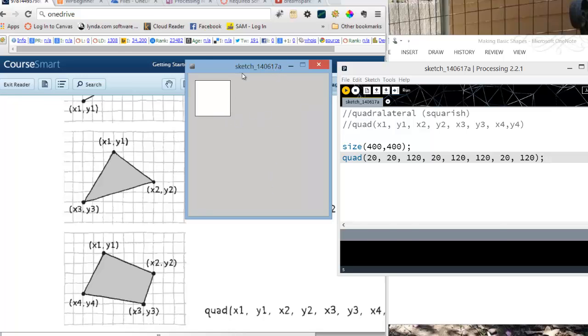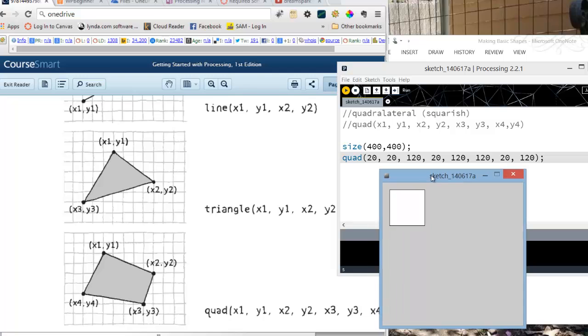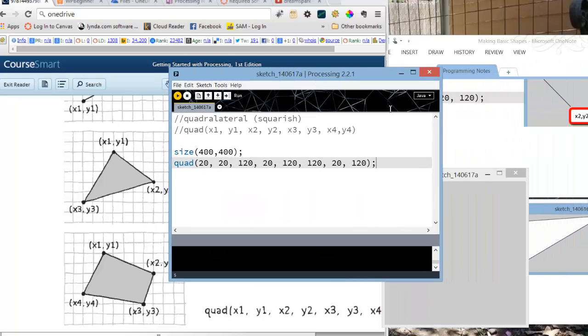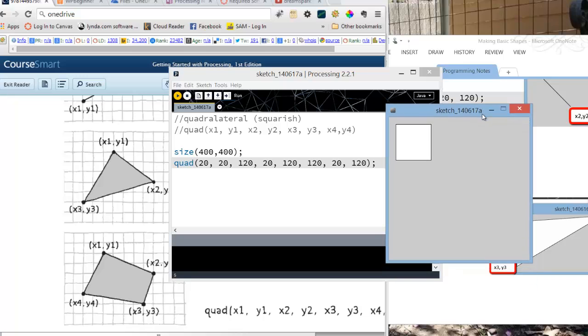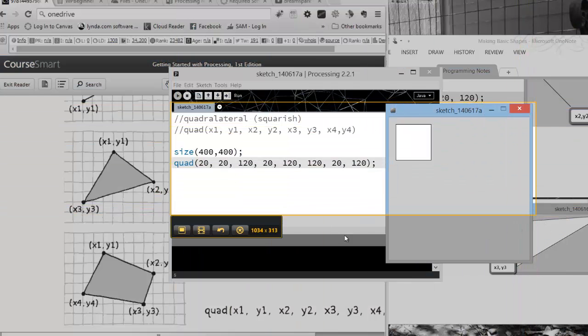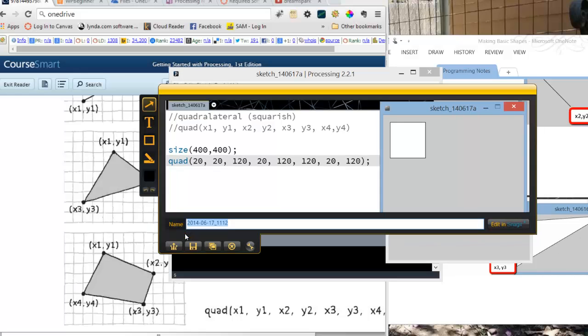And so what I'm going to do is I'm going to take a picture of this. And I like to do it side by side. So here's my code. Here's my results. I love Jing. I'm going to take a nice little snapshot here. And then I'm going to capture the image.